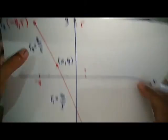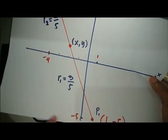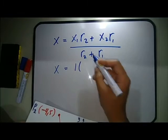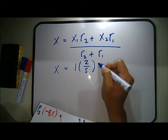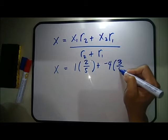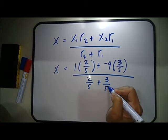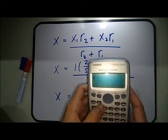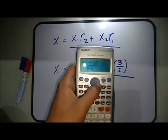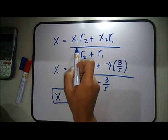So substituting: from Point 1 we have x1 equals 1, r1 is three-fifths and r2 is two-fifths. So x equals (1 times two-fifths) plus (negative 4 times three-fifths), all over (two-fifths plus three-fifths). Solving this gives x equals negative 2.